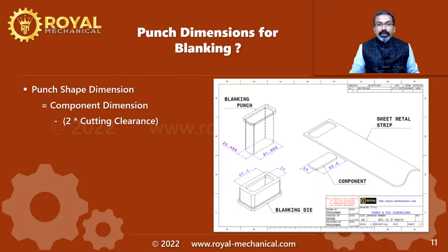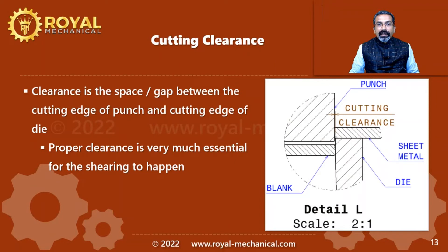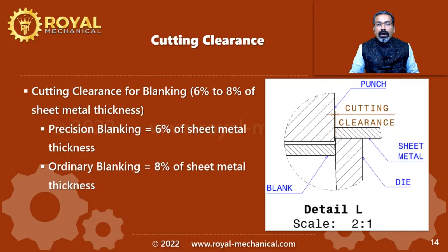Now let's calculate the punch dimensions. The formula is: punch shape dimension equals component dimension minus 2 times the cutting clearance. The cutting clearance is present all around the punch. Cutting clearance is the gap between the cutting edge of the punch and the cutting edge of the die, and it is essential for the shearing operation. For blanking, cutting clearance ranges from 6 to 8% of sheet metal thickness.